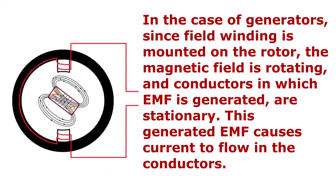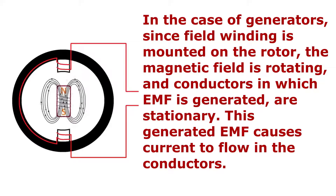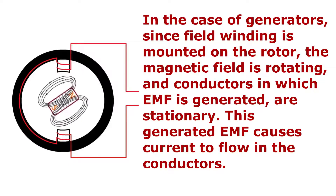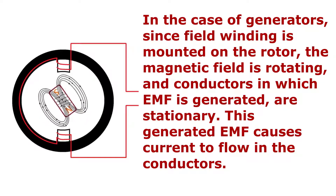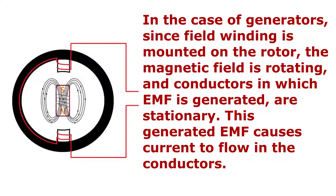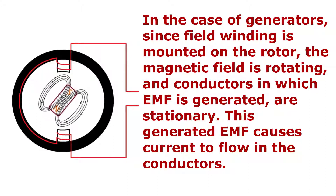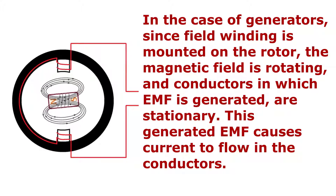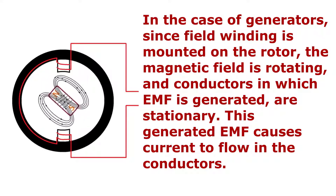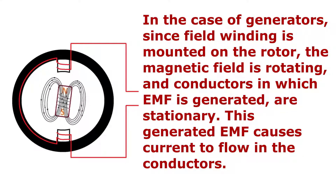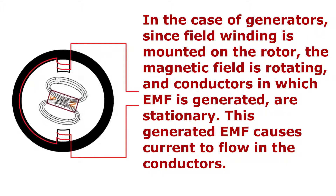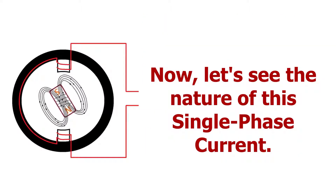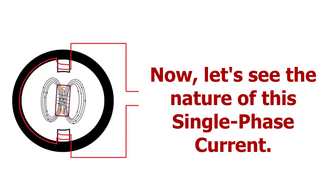In the case of generators, since the field winding is mounted on the rotor, the magnetic field is rotating and the conductors in which EMF is generated are stationary. This generated EMF causes current to flow in the conductors. Now let's see the nature of this current.